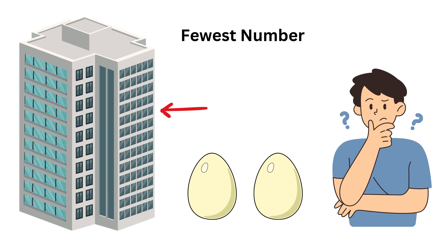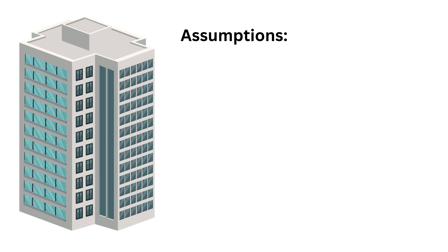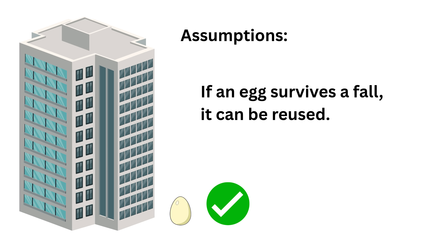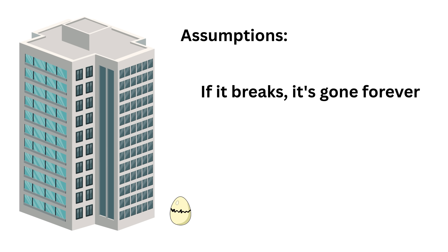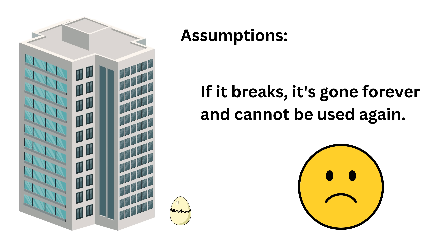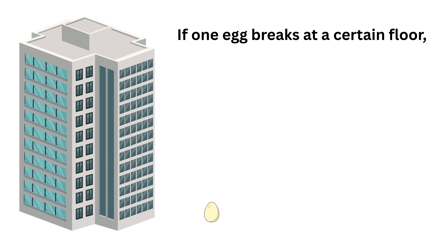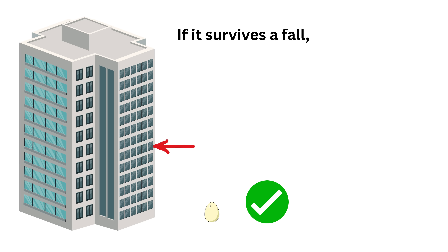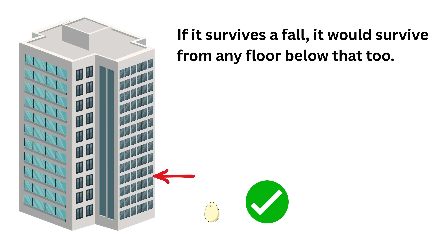Your goal is to use the fewest number of drops possible in the worst case. We are allowed to make a few assumptions. If an egg survives a fall, it can be reused. If it breaks, it's gone forever and cannot be used again. If one egg breaks at a certain floor, it would also break from any floor above it. And if it survives a fall, it would survive from any floor below that too.